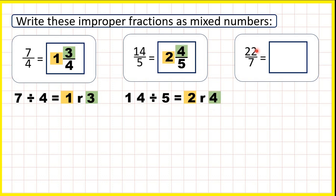Now 22 sevenths. So, the denominator of our mixed number will also be 7, and we need to divide 22 by 7. So, divide the numerator by the denominator.